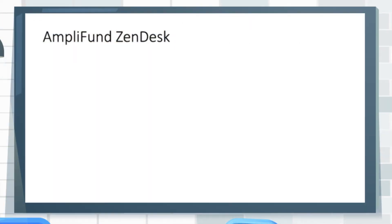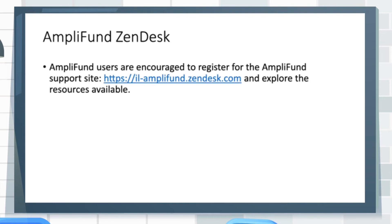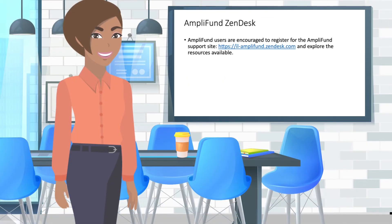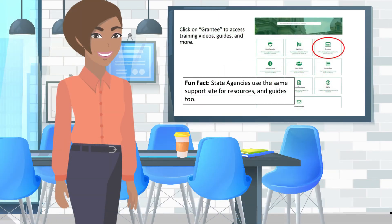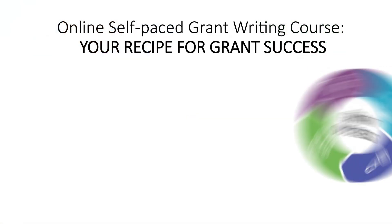For more information and tutorials regarding Amplifund, register for the Amplifund Zendesk. Amplifund users are encouraged to create a login for the support site. This site is separate from the GATA grantee portal and the Amplifund grant management system — it is an independent support site specifically for Amplifund. Here, users can request support and find resources and videos to help with all things related to Amplifund. This is the same site state agencies use when they need Amplifund support to locate guides and resources.